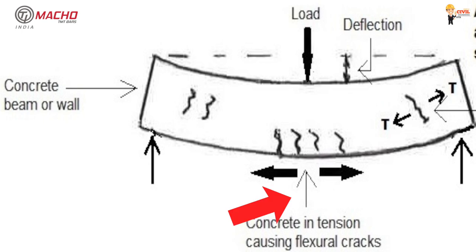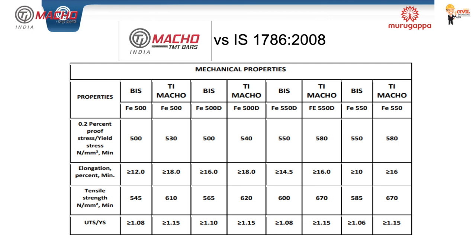The slab rests on the ground. As we use a TMT bar, there is a yield stress value. For Fe 500D, the yield stress is 565 N/mm².